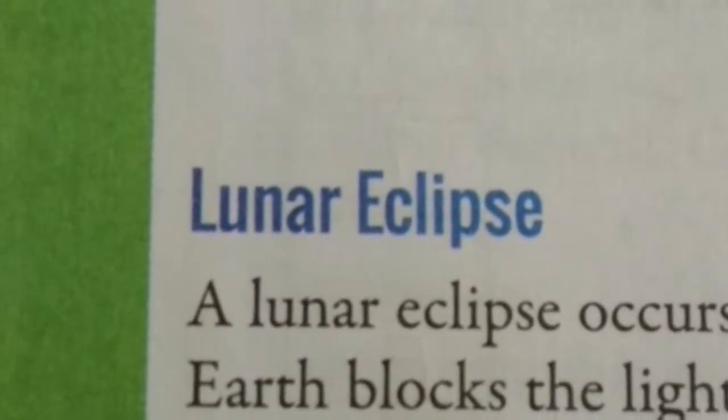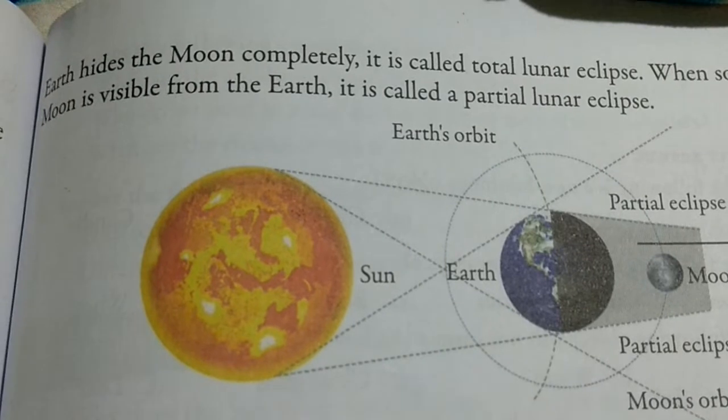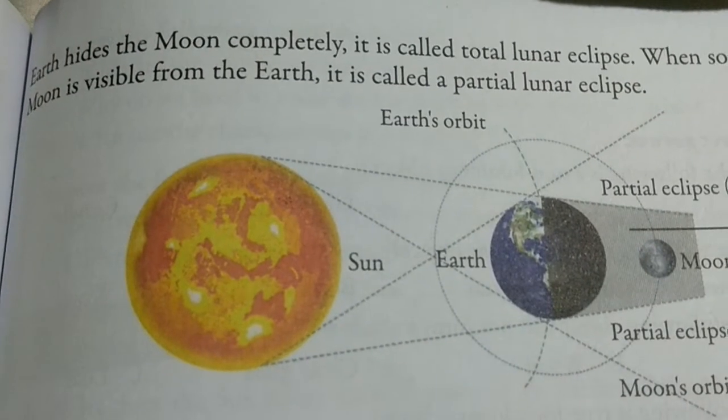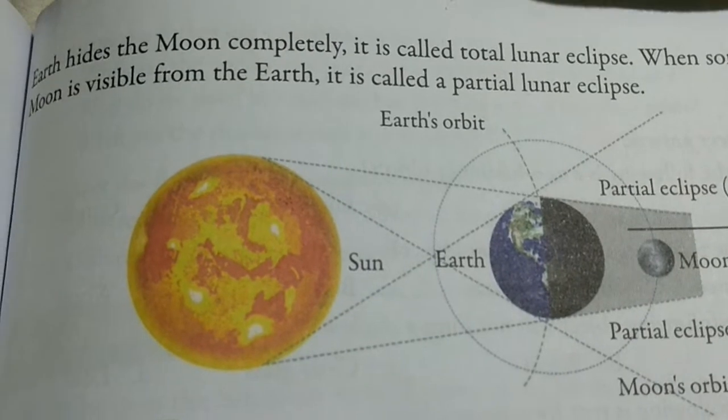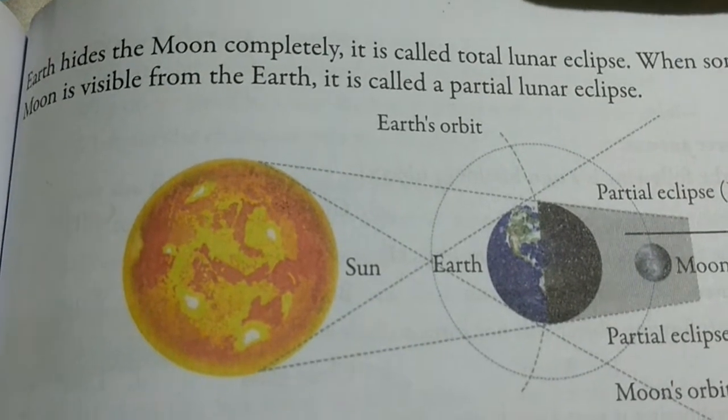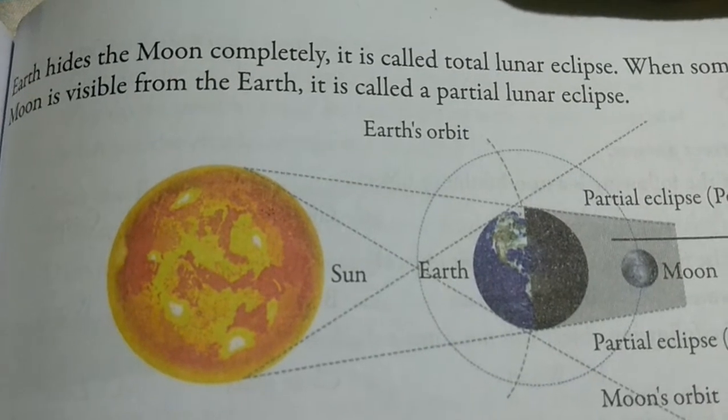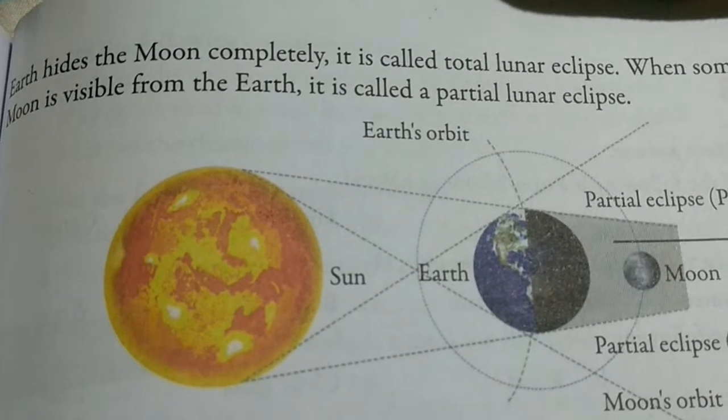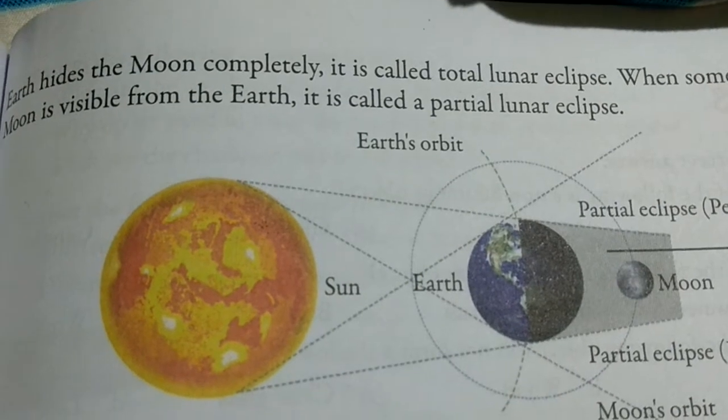Now let us study about lunar eclipse. Lunar eclipse occurs on a full moon night when the earth comes between the sun and the moon. When the sun, earth and the moon are in a straight line, the earth blocks the light from reaching the moon and the earth casts a shadow on the moon. This causes a lunar eclipse.